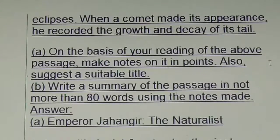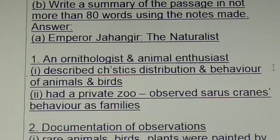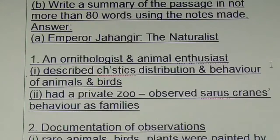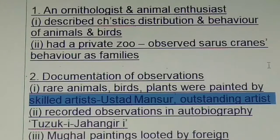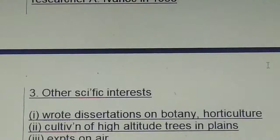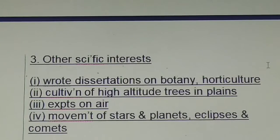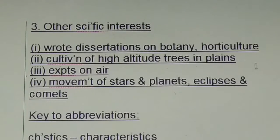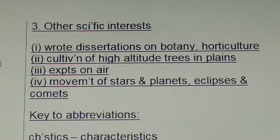On the basis of your reading of the above passage, make notes using abbreviations and write the summary. Here's the answer, children. Heading: Emperor Jahangir — Naturalist. Then point number one — see how 'characteristics' is abbreviated in the first point. Do you see that, children? Have a look. Then point number two: documentation of observations — see how the points are written, see how 'adventurous' is abbreviated.